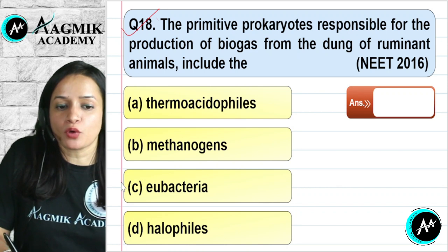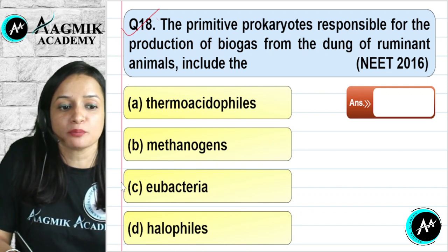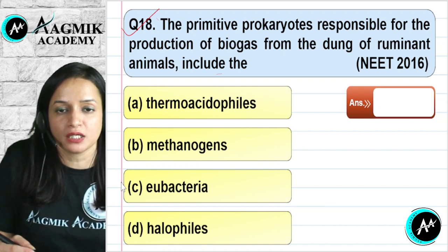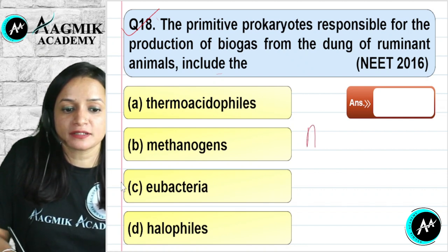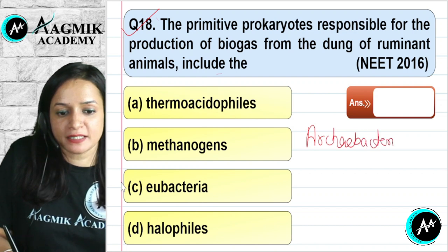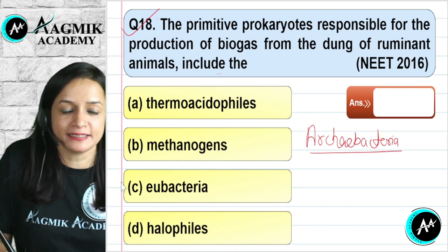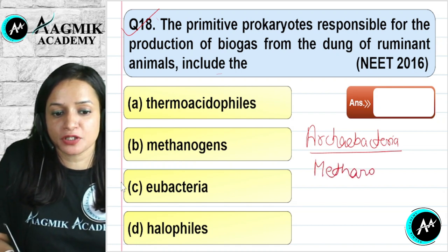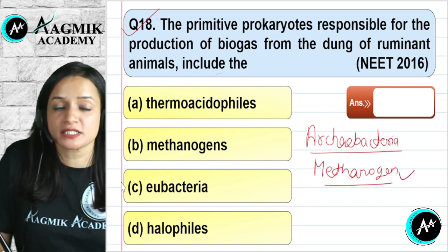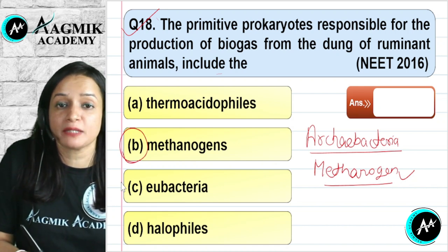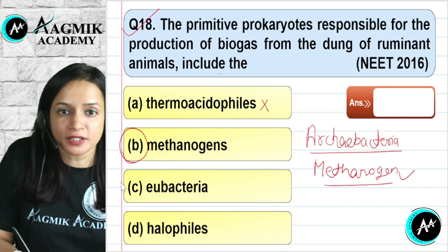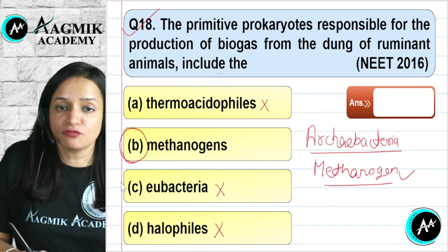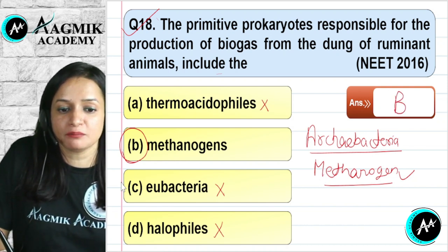Question number 18: Which primitive prokaryote is responsible for the production of biogas from the dung of ruminant animals like cows and buffaloes? Biogas production is done by archaea bacteria, specifically methanogens, which are strictly anaerobic. Thermoacidophiles and halophiles (salt-loving bacteria) are not used for biogas production. The correct option is B — methanogens.